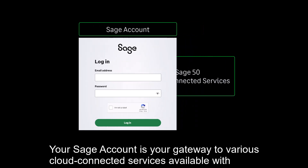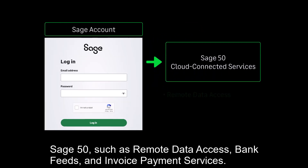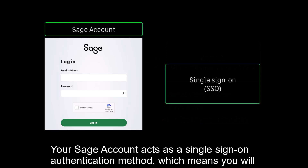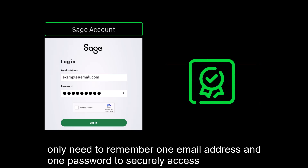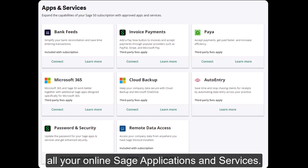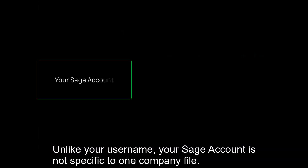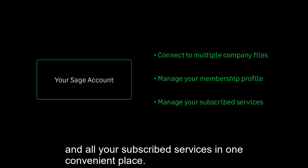Your Sage account is your gateway to various cloud-connected services available with Sage 50, such as remote data access, bank feeds, and invoice payment services. Your Sage account acts as a single sign-on authentication method, which means you will only need to remember one email address and one password to securely access all your online Sage applications and services. Unlike your username, your Sage account is not specific to one company file. It allows you to manage your membership profile and all your subscribed services in one convenient place.